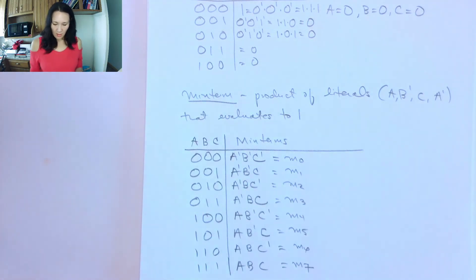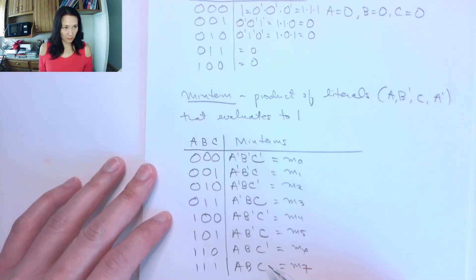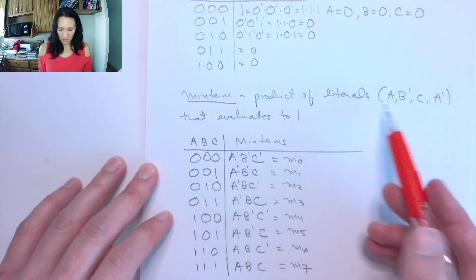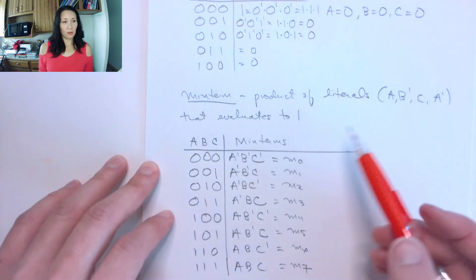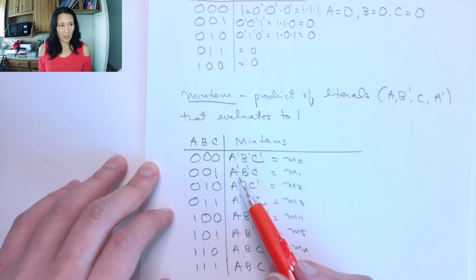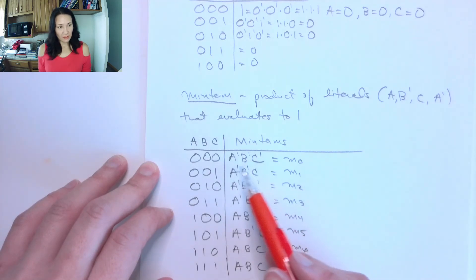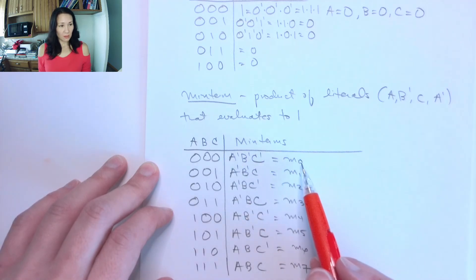So if I were to, the other term I need to tell you about besides minterms is I use this word literals. So literals is referring to like these numerical values that we use to denote our inputs. And these can be complemented or uncomplemented, but basically this product of literals here, the A's, the B's, the C naughts, whatever, give us the minterms.